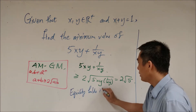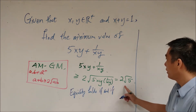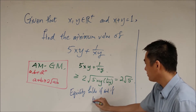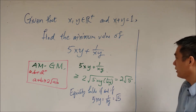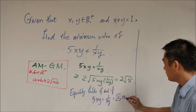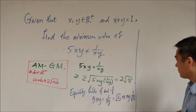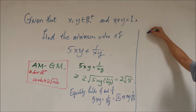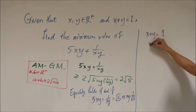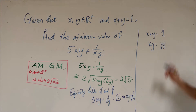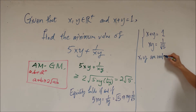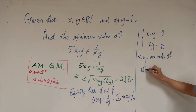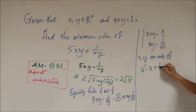However, we cannot conclude that 2 root 5 is the minimum value because it may not be achievable. The equality holds if and only if 5xy equals 1 over xy, which means xy equals 1 over root 5. Suppose this is true: we know x plus y equals 1 and the product xy equals 1 over root 5. This means x and y are roots of u squared minus u plus 1 over root 5, using Vieta's formulas.